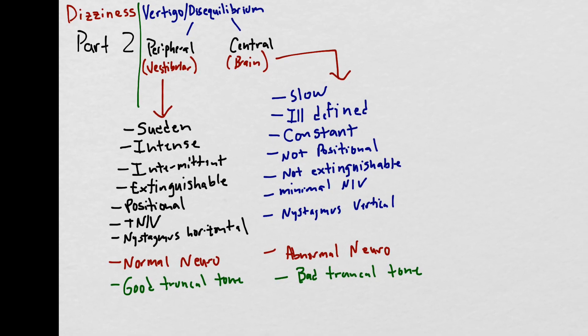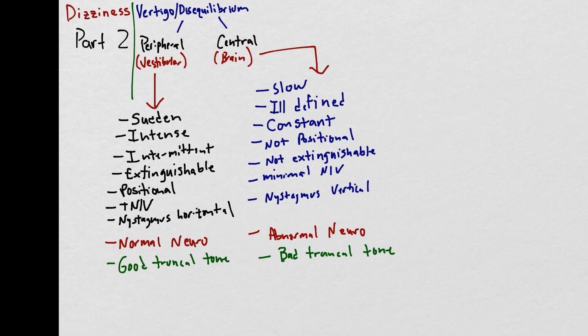As you can see this is a very long list and it can become a little confusing as to what is peripheral what is central especially if you try to memorize both at the same time. So what I tell my students is to memorize just one and to know that if it's not on this list it belongs to the other one. I chose to memorize things on the peripheral list because it happens more commonly and I seem to refer to it more frequently but you could just as easily memorize everything on the central vertigo list.